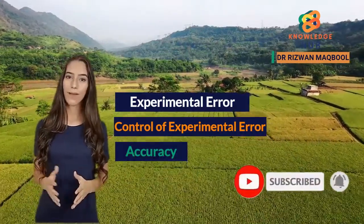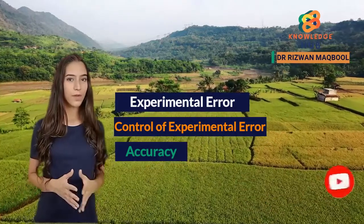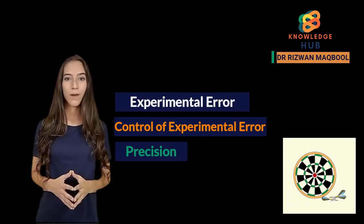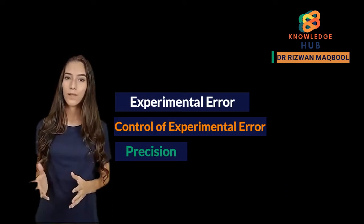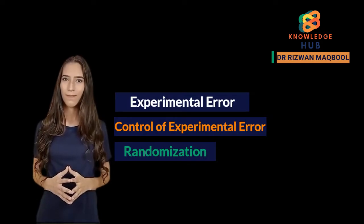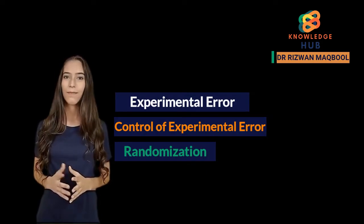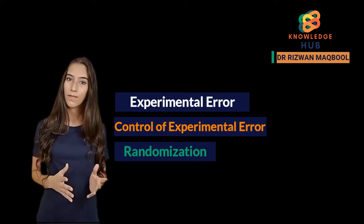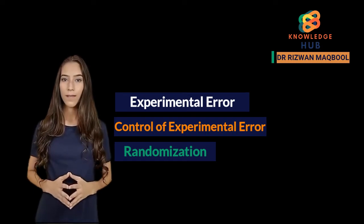Control of experimental error: the bullseye represents the true value of the parameter you wish to estimate. Accuracy equals without bias — the average is on the bullseye, achieved through randomization. Precision equals repeatability — measurements are close together, achieved through replication. Both accuracy and precision are needed.